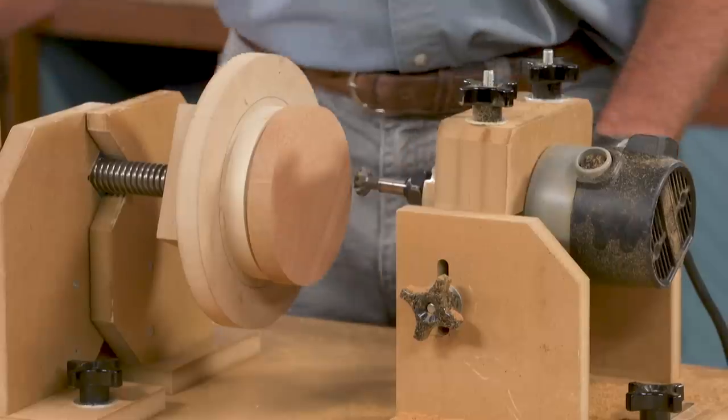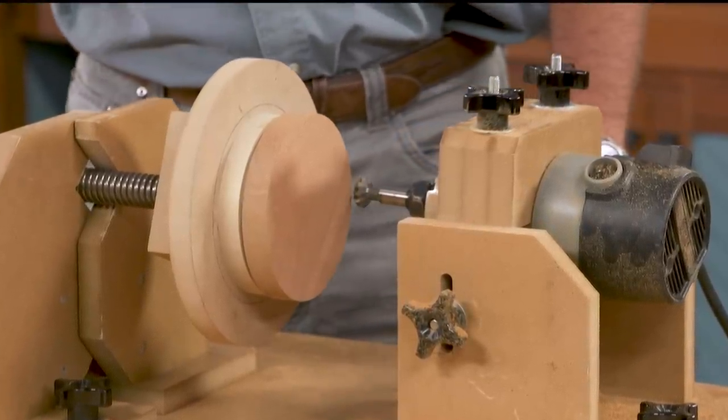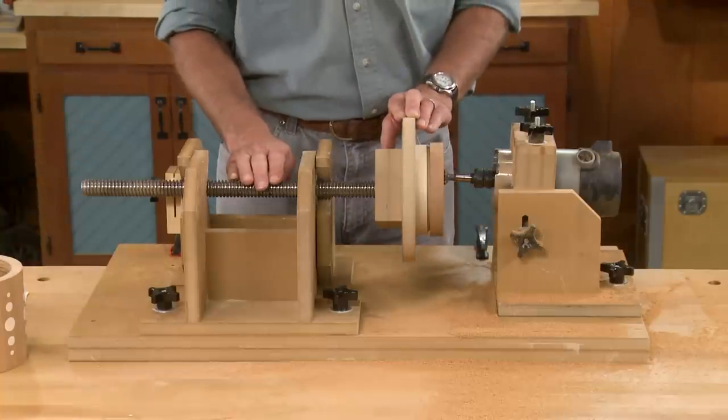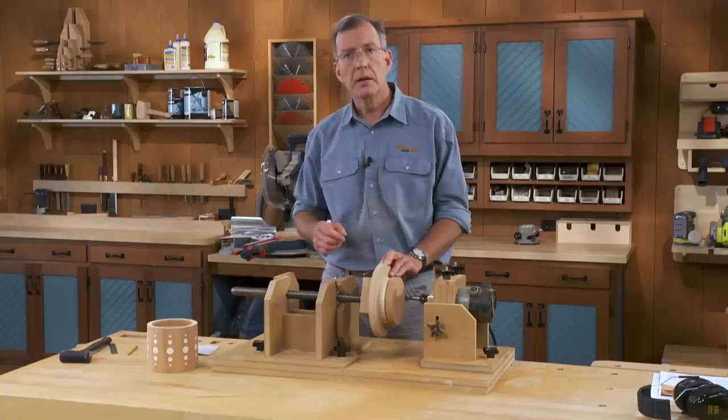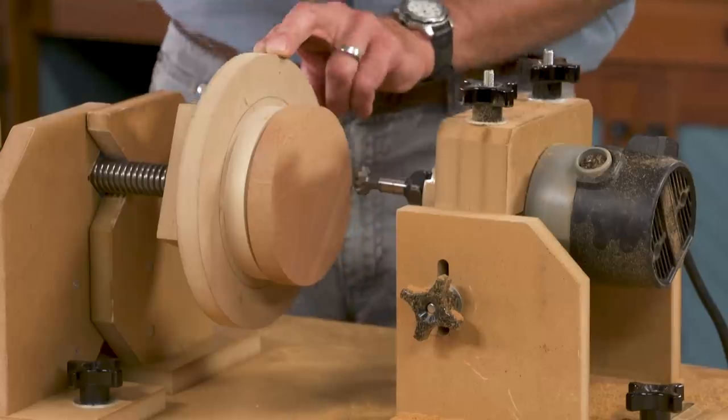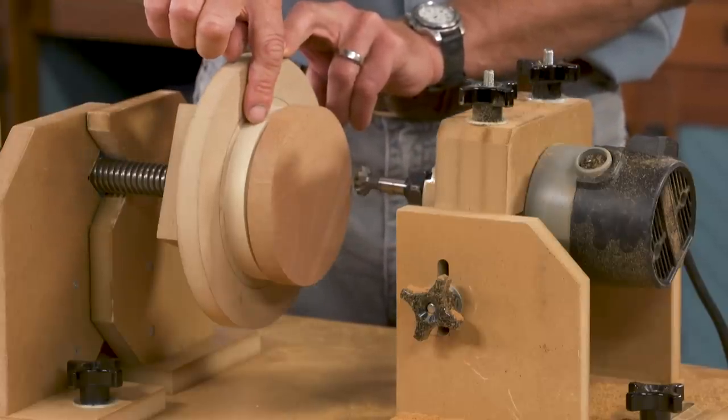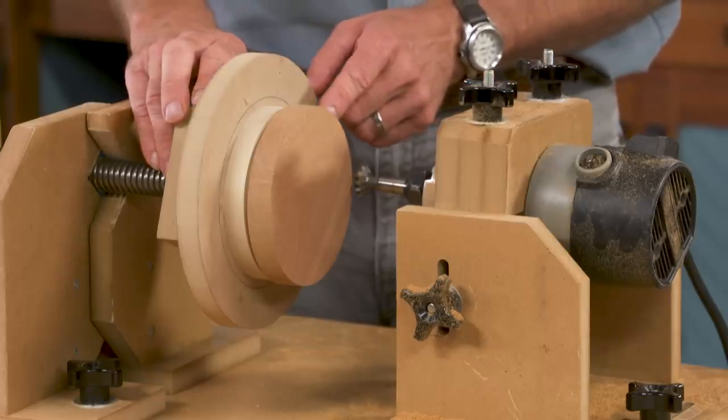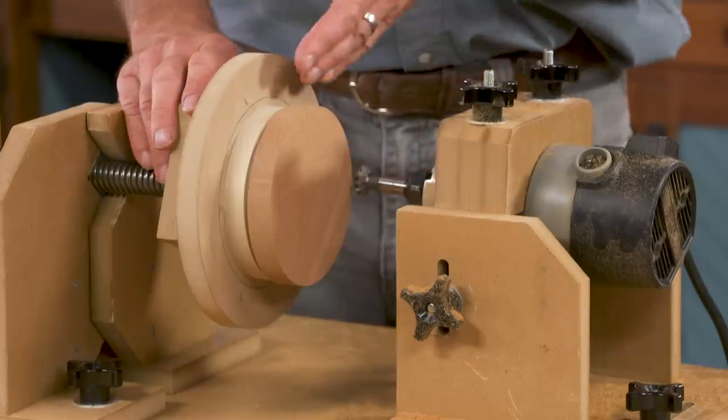Well, with the threads completed in our canister, it's time to cut the threads in the plug that's going to be part of the top for our project. I'm using the same platen and the same 1-5 all-thread. Now, by using the same all-thread, I know that the threads are going to match exactly in pitch. The plug is attached to the platen with a spacer in between. And why the spacer? Well, that allows me to run threads through the entire thickness of the plug without the router bit hitting the platen.